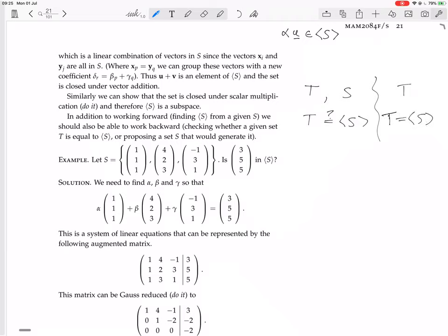Okay, so they give us an example here. So the example they give us is, you know, S be the subset of R³ with the vectors (1, 1, 1), (4, 2, 3), (−1, 3, 1). The question is, is (3, 5, 5) in the set generated by S?